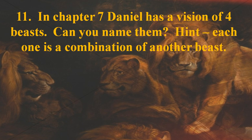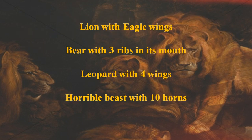Number eleven: in chapter seven, Daniel has a vision of four beasts — can you name them? Each one is a combination or has something to do with another beast. If all you do is name the main beast, that's fine. First is the lion with eagle wings, the bear with three ribs in its mouth, the leopard with four wings like a bird, and a horrible beast with ten horns.